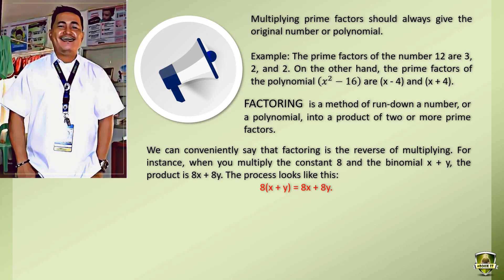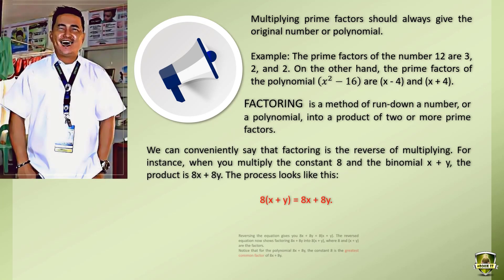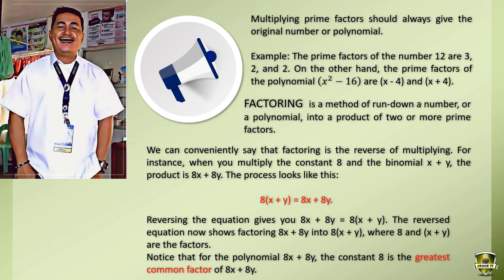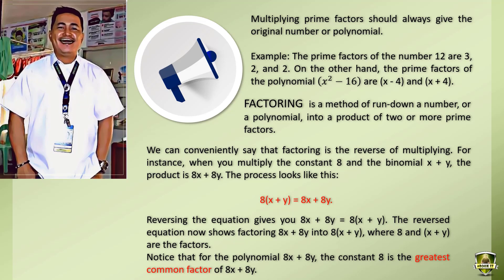For instance, when you multiply the constant 8 and the binomial x plus y, the product is 8x plus 8y. The process looks like this: 8 times the quantity x plus y equals 8x plus 8y. Reversing the equation gives you 8x plus 8y equals 8 times the quantity x plus y. The reversed equation now shows factoring 8x plus 8y into 8 times the quantity x plus y, where 8 and the quantity x plus y are the factors. Notice that for the polynomial 8x plus 8y, the constant 8 is the greatest common factor.